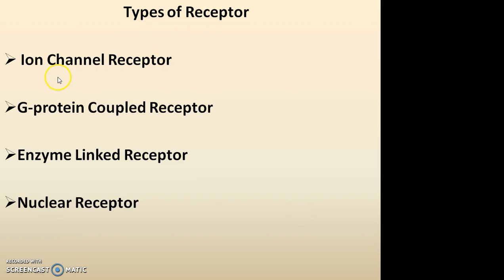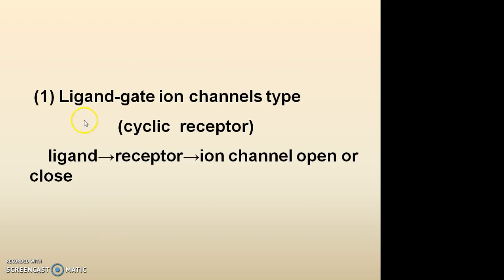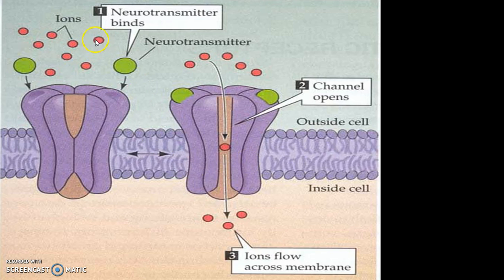There are four types of receptors: ion channel receptor, G protein coupled receptor, enzyme-linked receptor, and nuclear receptor. For ligand-gated ion channel receptors, after binding of a ligand to the ion channel receptor, the ion channel is either opened or closed. As shown in this figure, when a neurotransmitter binds to the ion channel receptor, the ion channel opens and leads to an influx of extracellular ions into the cell.